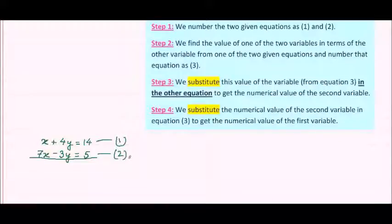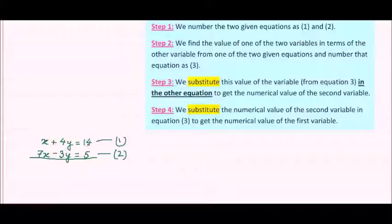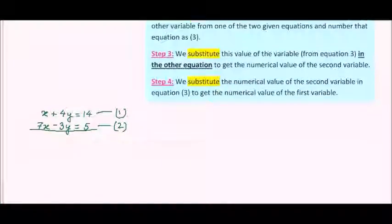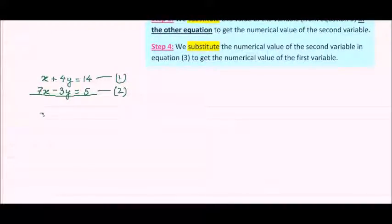Now we come to step number 2. It says that we find the value of one of the two variables in terms of the other variable from one of the two given equations, and number that as equation number 3. Let us select the first equation, x plus 4y equal to 14.